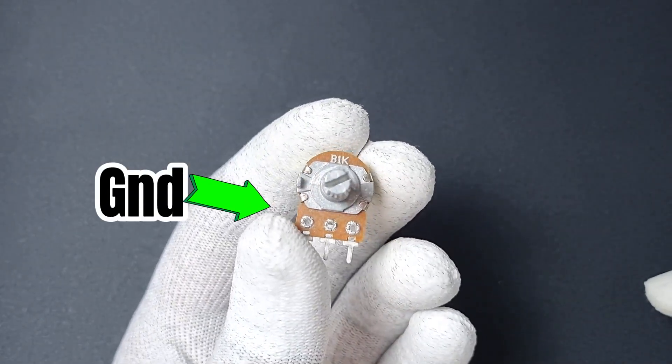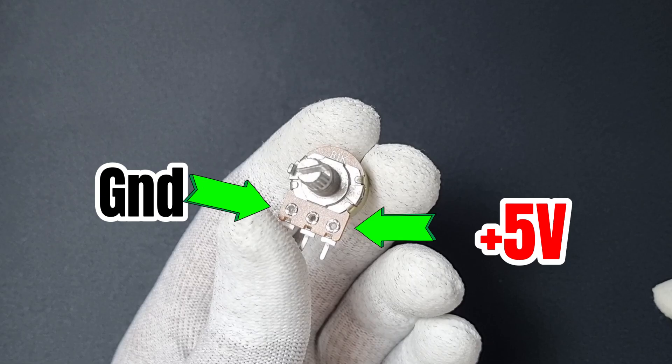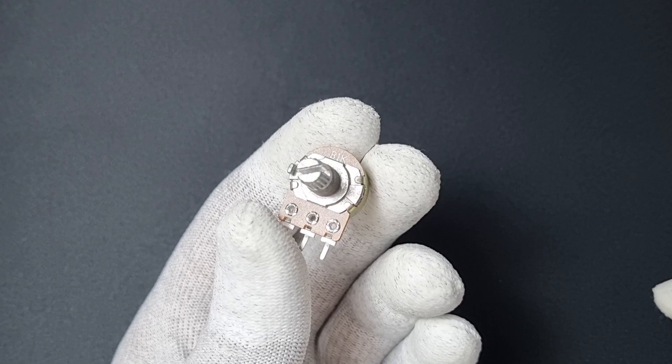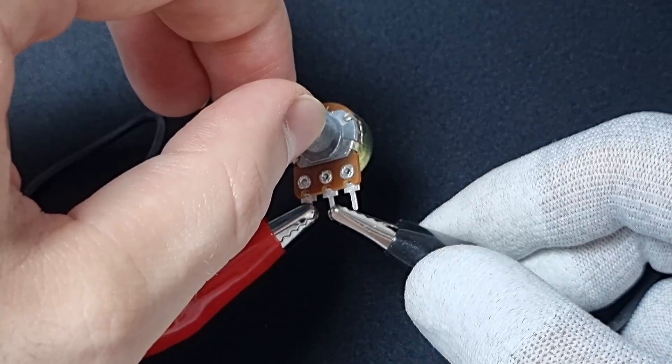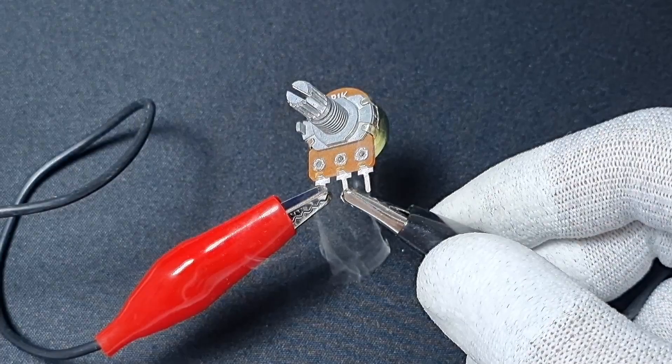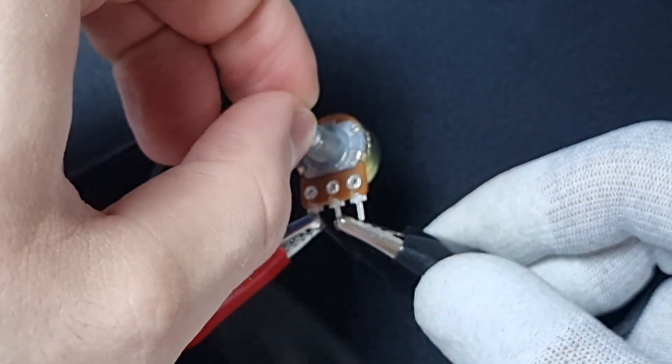If you connect ground to the first terminal and a positive voltage to the last terminal, it will work like a voltage divider, providing you with an adjustable voltage at the middle pin. However, be careful, you can't draw much current from it or it will get damaged.